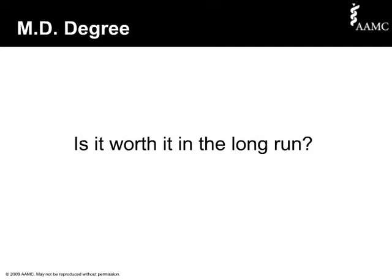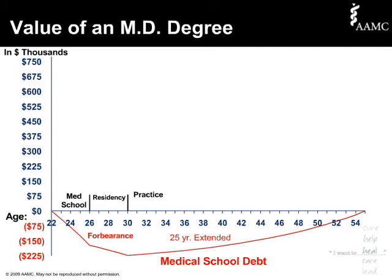If you typically see the glass as half-empty, you might be wondering to yourself: is it worth it in the long run? Why put yourself through all these years of school in order to repay all of this debt? The short answer is yes. Here's the graph showing Dr. Median's medical school debt side of the ledger. By the time Dr. Median graduates from medical school, the total balance owed is a little over $171,000. If she chooses forbearance during a four-year residency, she faces a balance of about $222,000 after the residency. Then, choosing a 25-year extended repayment plan, Dr. Median will pay $1,500 a month for 25 years and be debt-free by age 55.